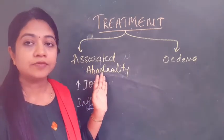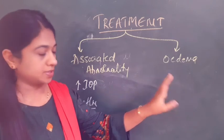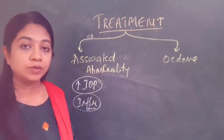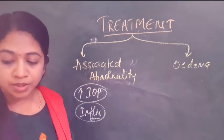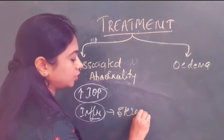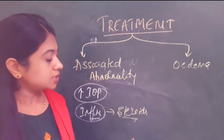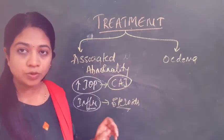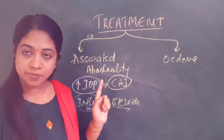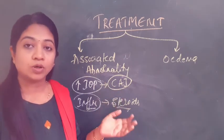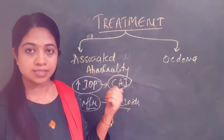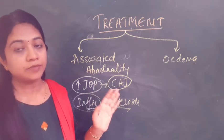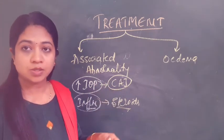Treatment can be divided into treatment of associated abnormalities and treatment of corneal edema proper. For associated abnormalities, treat raised intraocular pressure and inflammation — endotheliitis secondary to herpes infection should be treated with steroids to reduce inflammation, which will resolve the corneal edema. For reducing IOP, use carbonic anhydrase inhibitors cautiously, because carbonic anhydrase enzyme present in the corneal endothelium — if inhibited — can worsen corneal edema. There are reports of corneal edema worsening with topical dorzolamide, and oral acetazolamide should also be used carefully.